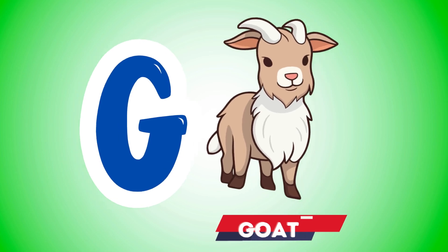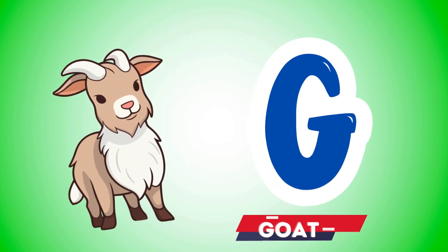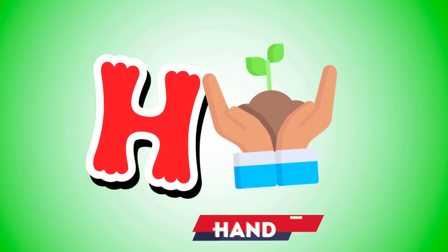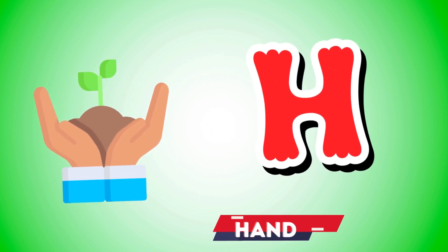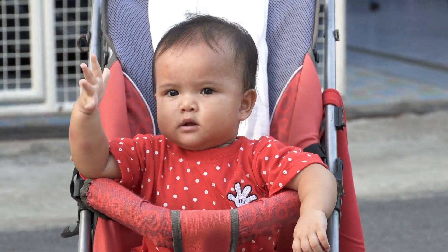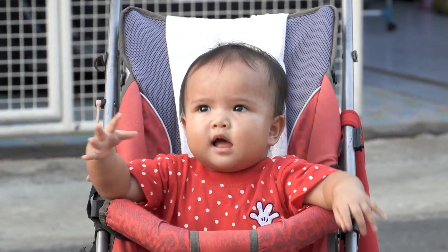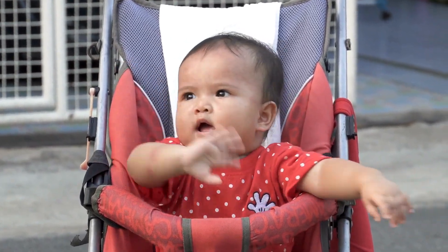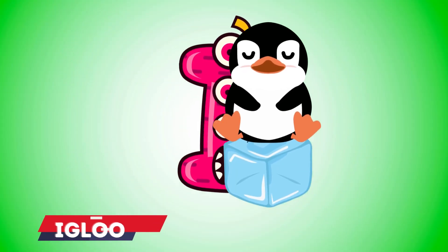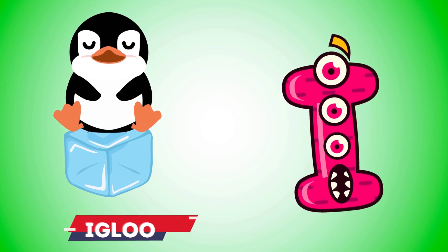G is for goat, g-g-goat. H is for hand, a-a-hand. I is for igloo, i-i-igloo.